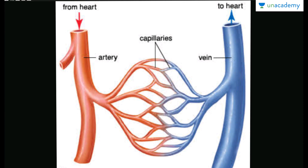From the heart blood travels through the artery. Then there is the arteriole, which is the smaller part of the artery. Then the arteriole gives rise to capillaries. From the capillaries venules are formed, and venules join to form a vein. The vein enters the heart and the artery leaves the heart.